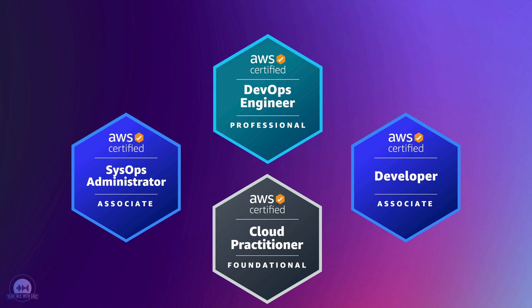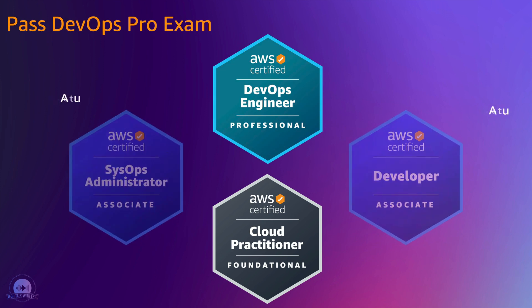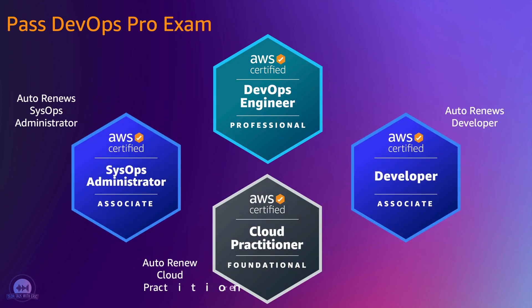That was for the solutions architect associate path. There are two other associate certifications that fall under the DevOps engineer professional. When going down the path of getting your DevOps engineer, I highly recommend doing the developer associate and the sysops administrator first, because those two combined are essentially the basis of the DevOps engineer professional. So if you pass your DevOps Pro, you're going to automatically renew your sysops, your developer, and your cloud practitioner — four certifications for the price of one, assuming they're all in good standing. Your expiration dates will match that of your professional.